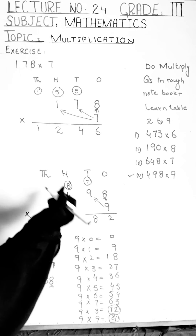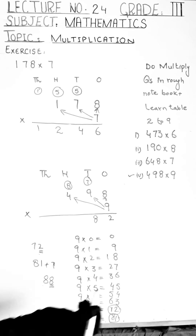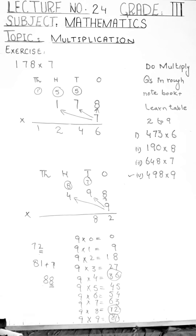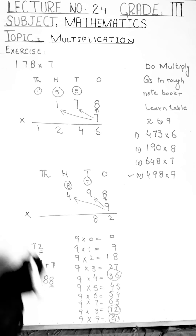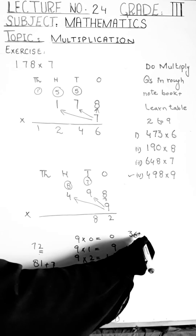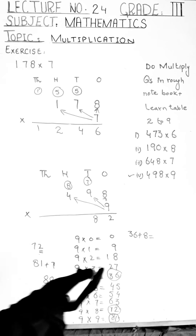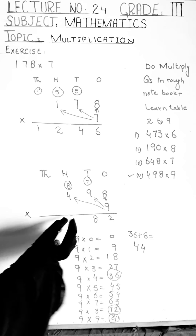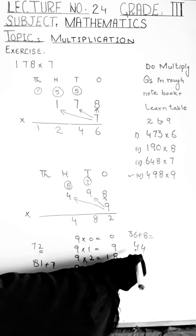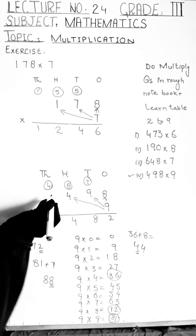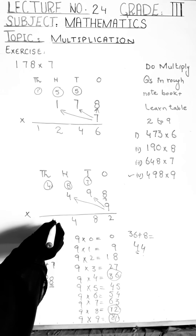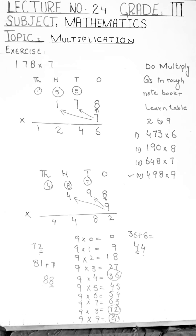The next place value is hundreds. We read the table of nine up to four — nine fours are thirty-six. We add the carry eight to thirty-six: thirty-seven, thirty-eight, thirty-nine, forty, forty-one, forty-two, forty-three, forty-four. We write four in the hundreds column and carry four into the thousands column. There is no number left to multiply, so we write this four in the answer. When we multiply four hundred ninety-eight by nine, the answer is four thousand four hundred and forty-two.